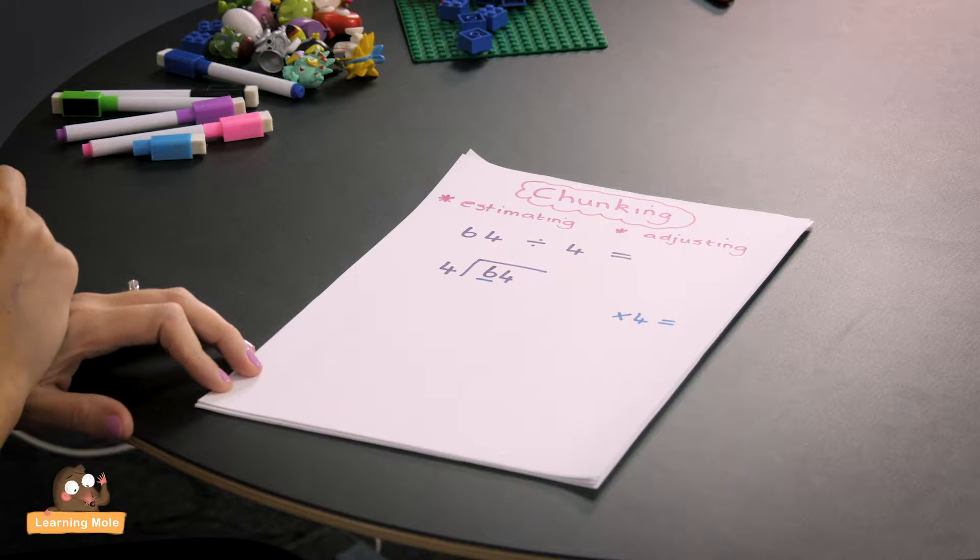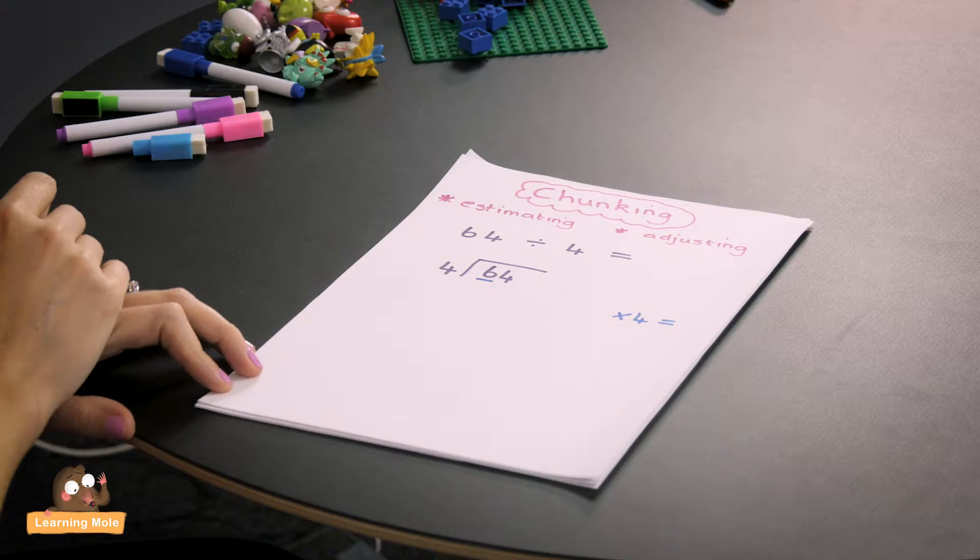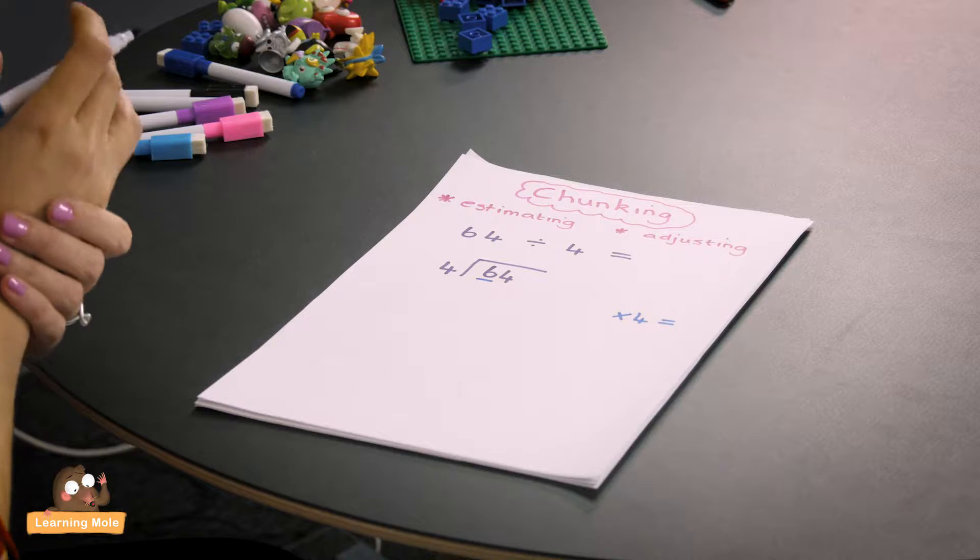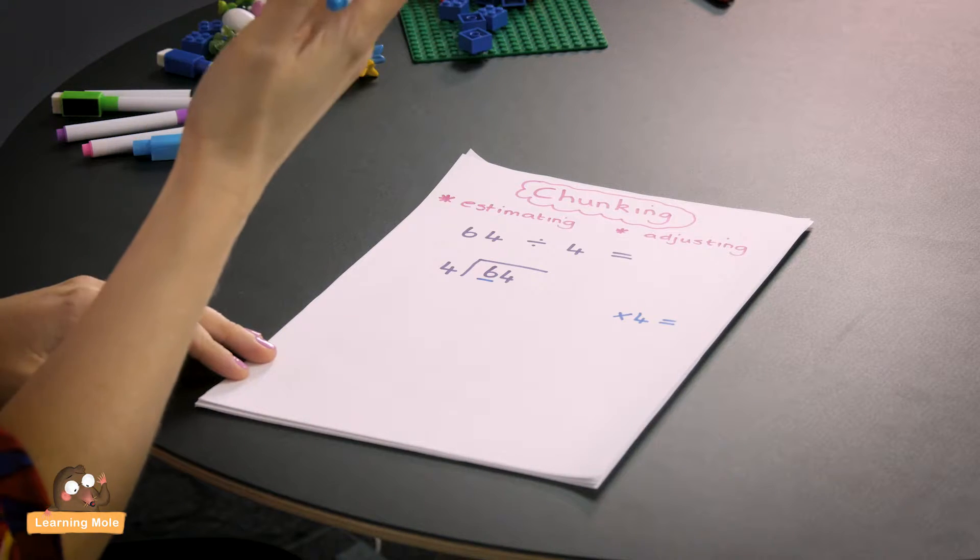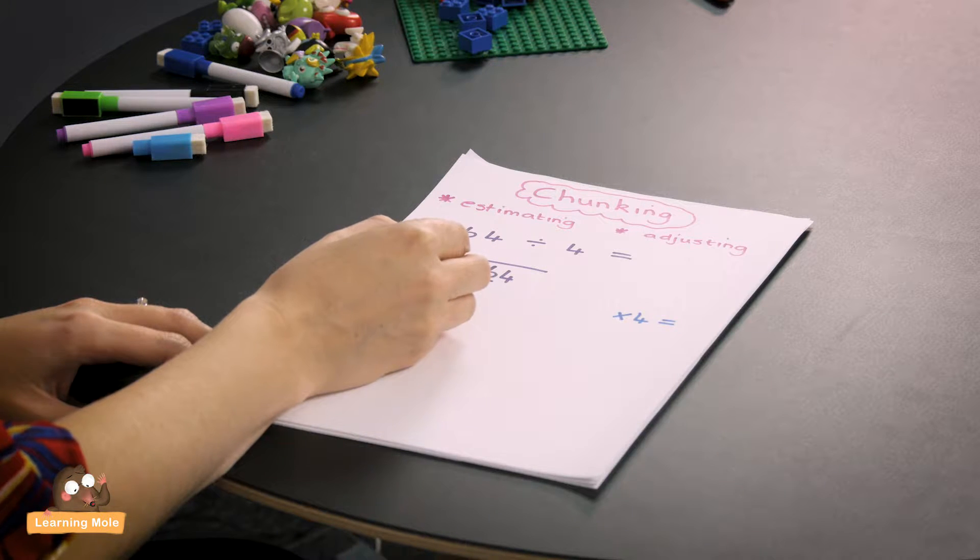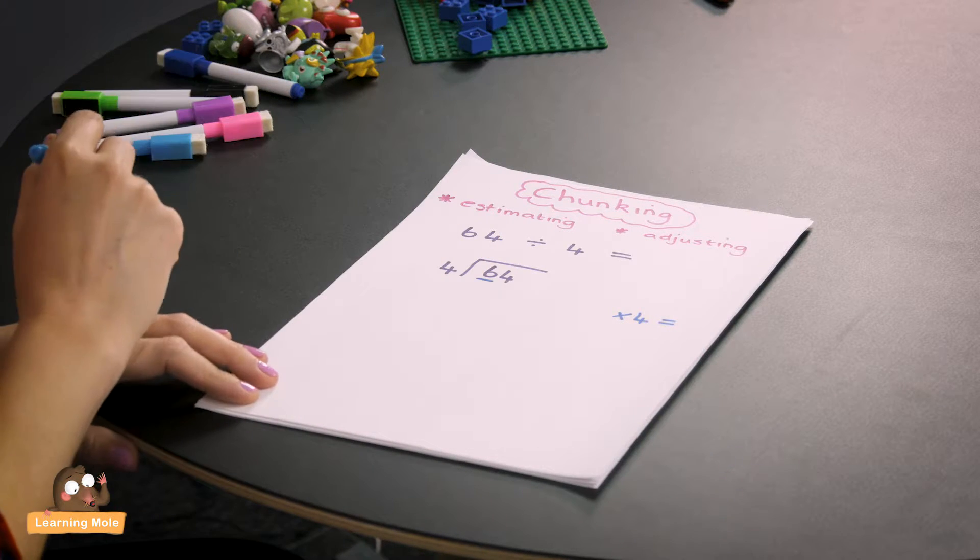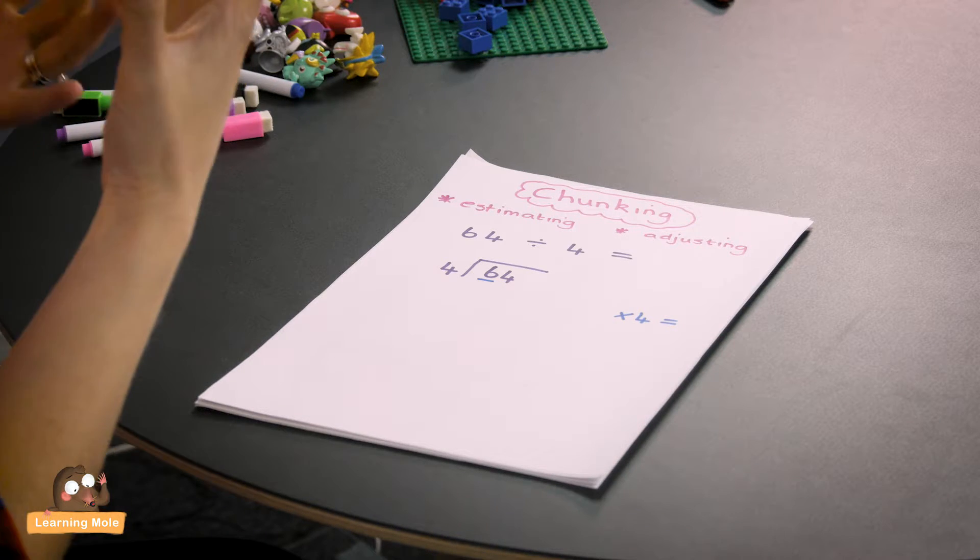You've got your number in here and you're going to estimate first of all. Division is slightly different to everything else. Everything else starts with units and works up; division starts the opposite way around. Here we've got the 6 and we want to know how many times 4 can go into 6. Here you'll be talking with your child that this 6 is actually 60.